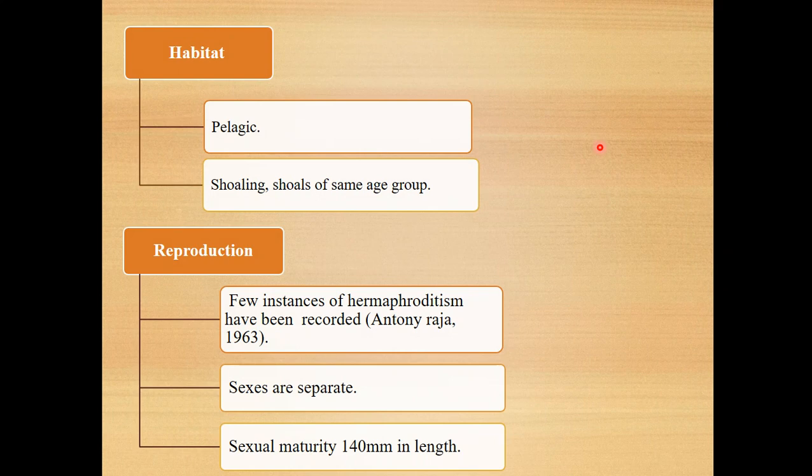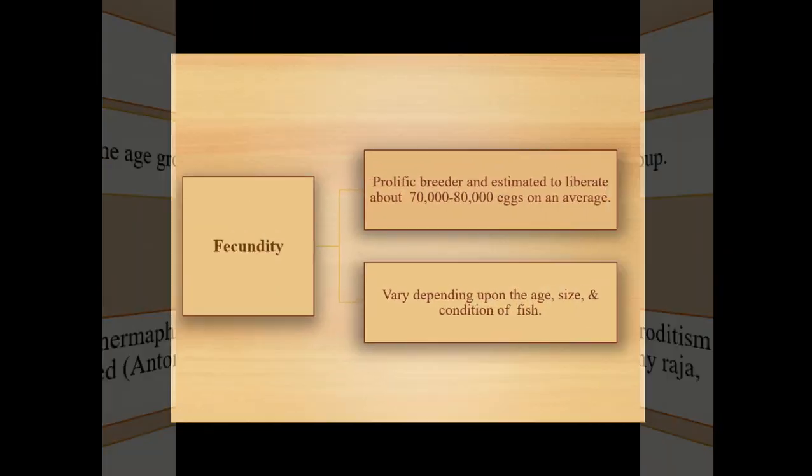The papilla is less conspicuous in fish maturing for the first time. Sex can be distinguished in specimens above 140 mm in length. Reproduction takes place when the fish reaches about 140–150 mm in length, typically after one year of age.